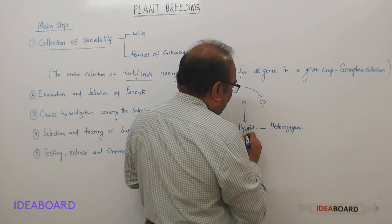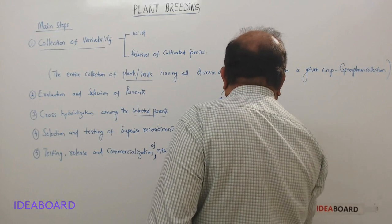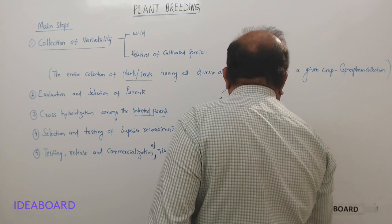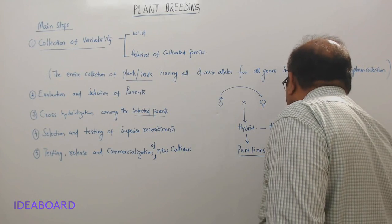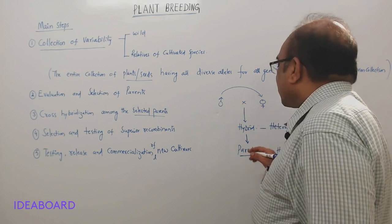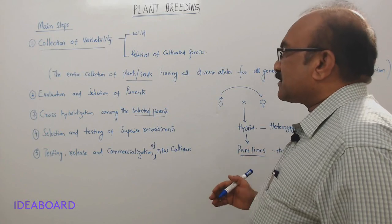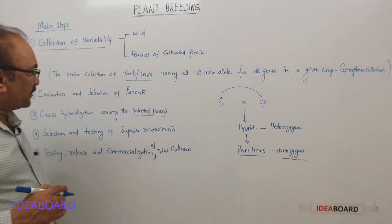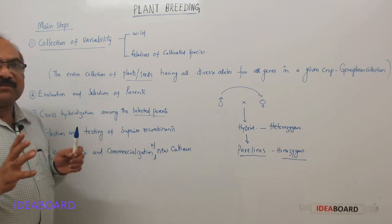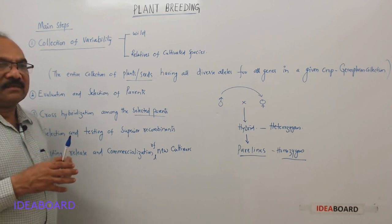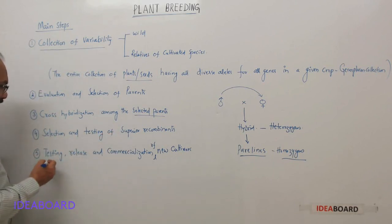The hybrid plants are heterozygous. From these hybrids, selfing is performed for several generations to create pure lines, which are homozygous for the desired characters and have uniform traits. After obtaining pure lines, breeders proceed to step four: selection and testing of superior recombinants. Among the pure lines, they select the best one, which is tested in research fields.